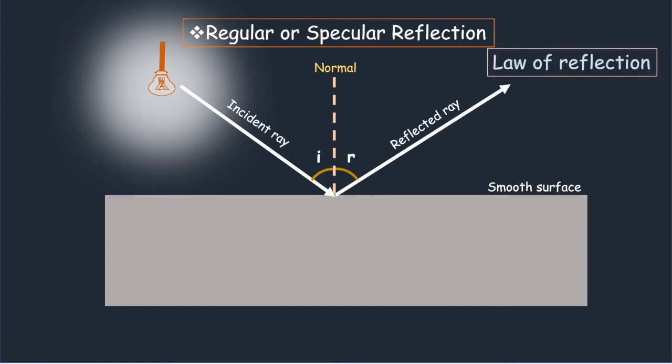The law of reflection simply states that both of these angles have the same value. For instance, if the angle of incidence is 45 degrees, the angle of reflection will also be 45 degrees.